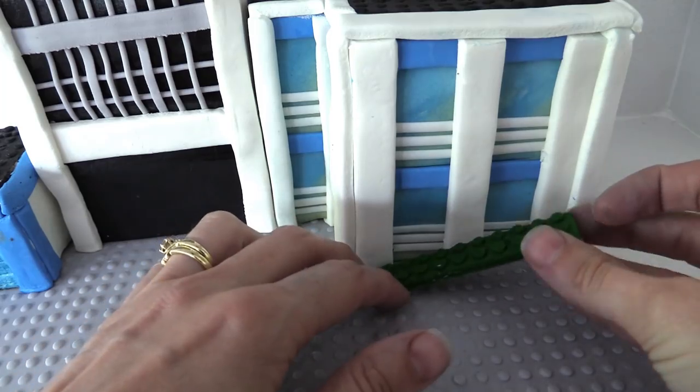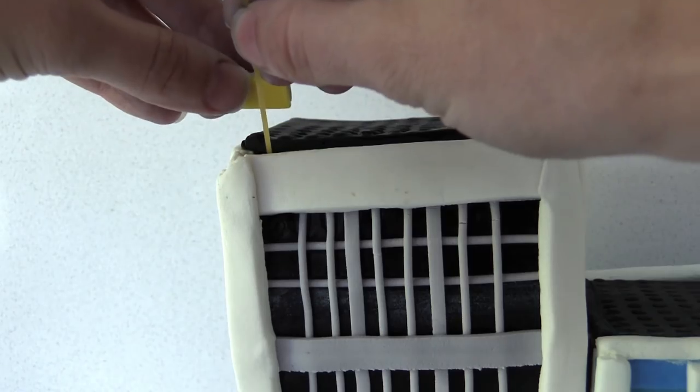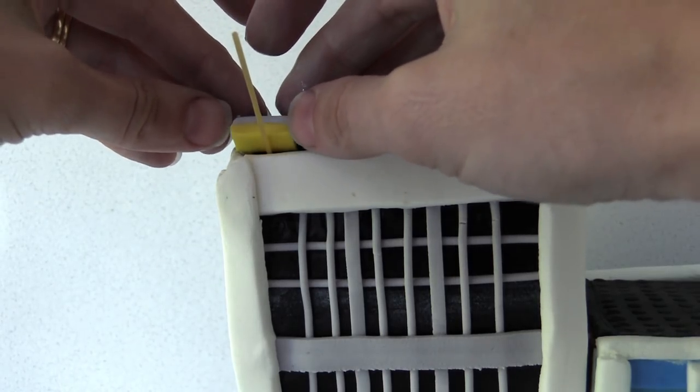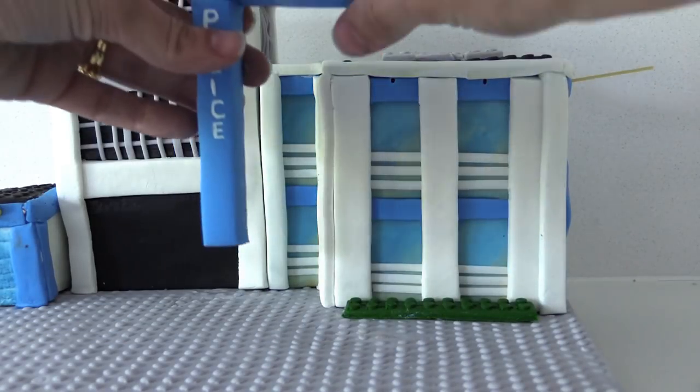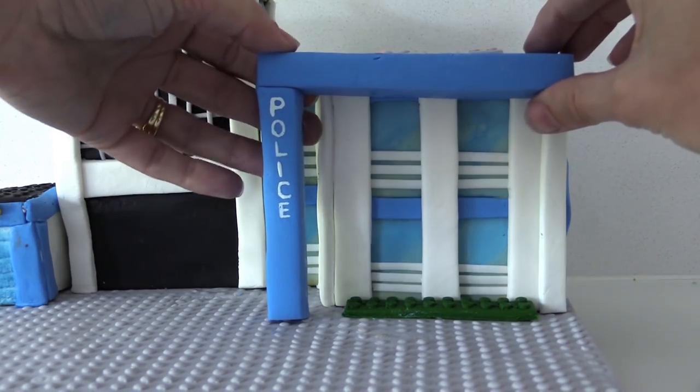Use your fondant grass piece out the front. Then use some spaghetti to support the lights while they set. Just use a little bit of water on the back of the fondant to join it onto the cake. Add the front of the station and again you might need to use a little bit of spaghetti to support it while it's drying out and joining on.